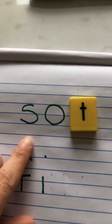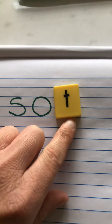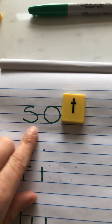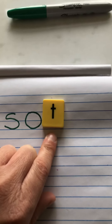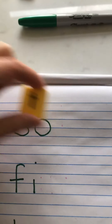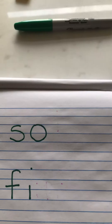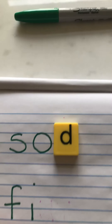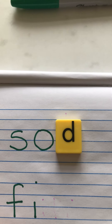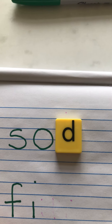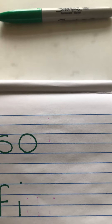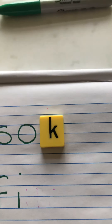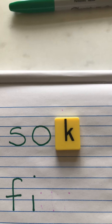We're going to try with our first word. If I push these sounds together — s-o-t — the word is sot. Change the t to a d, and you get the word sod. Change the d to a k, and you get the word sock.